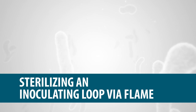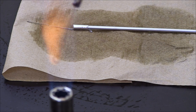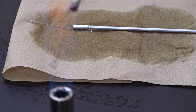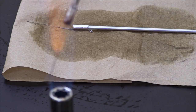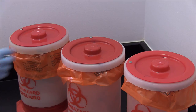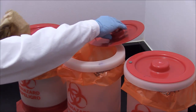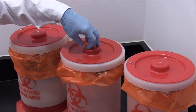Sterilizing an inoculating loop via a flame: sterilize the inoculating tool to complete the process. Discard all contaminated tools and waste into a biohazardous container and disinfect the bench.